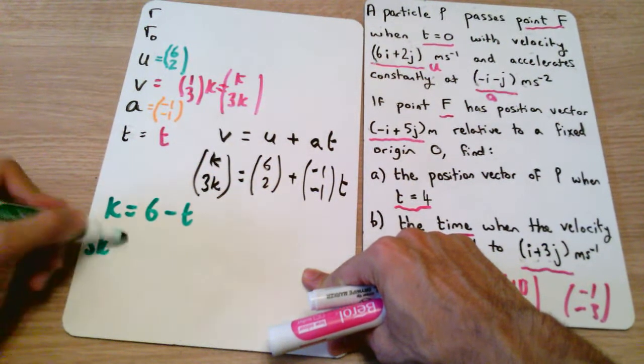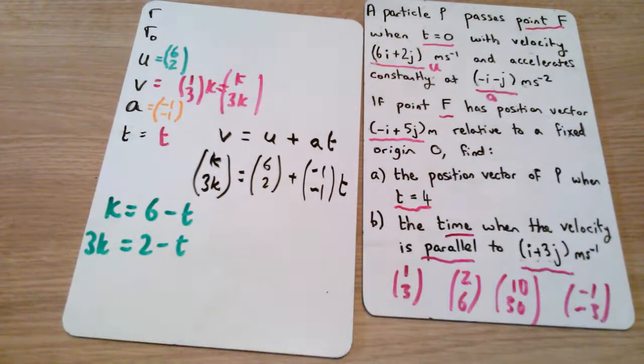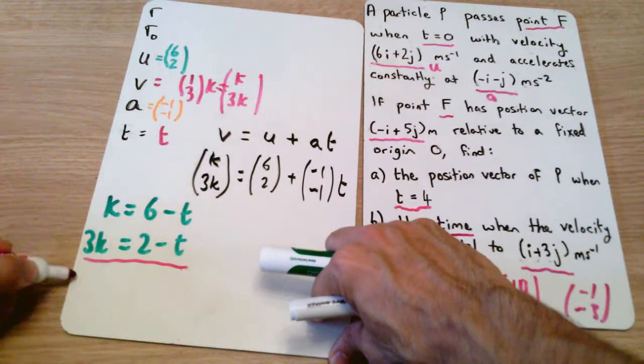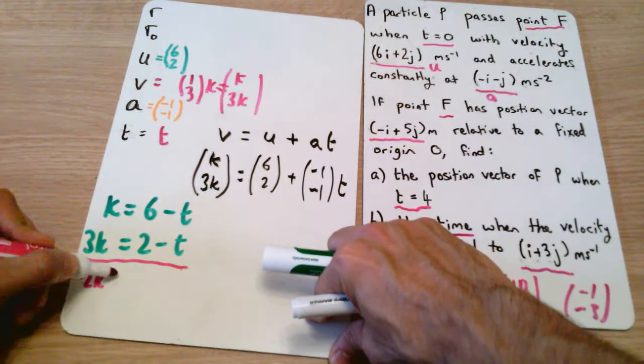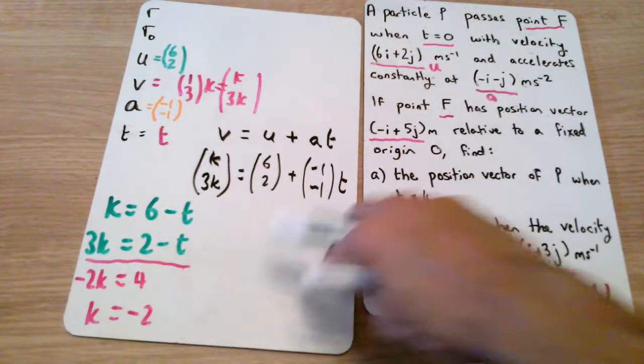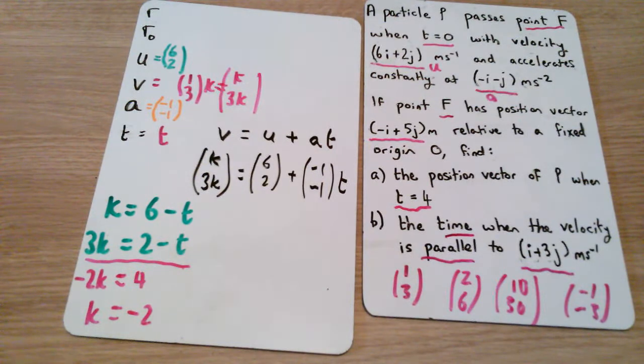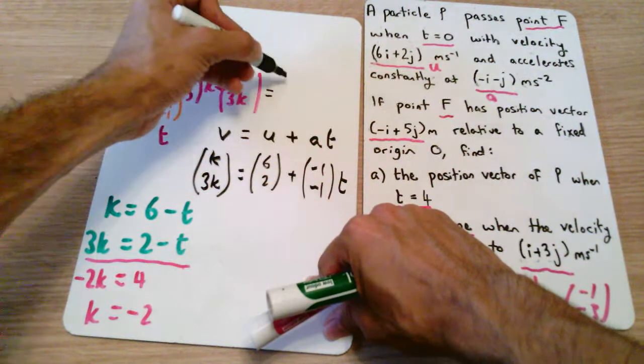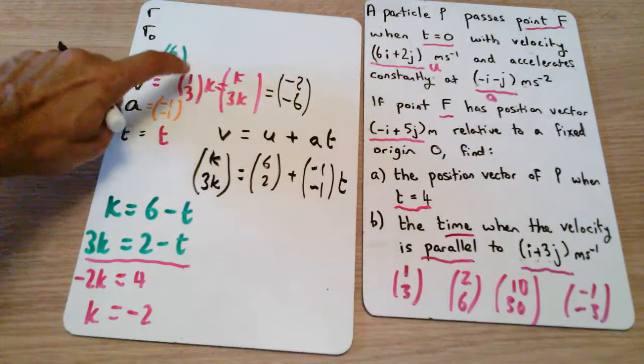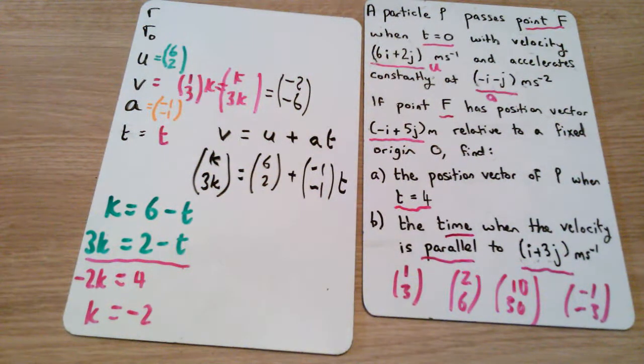If I now subtract those two equations, our minus t's are going to cancel out. So this is a simultaneous equation. When I subtract k minus 3k is minus 2k. 6 minus 2 is 4. Therefore, k is equal to minus 2. That means, technically, our velocity would have been k is minus 2, so minus 2 and minus 6. That is definitely a multiple of 1, 3. It's 1, 3 times by minus 2.